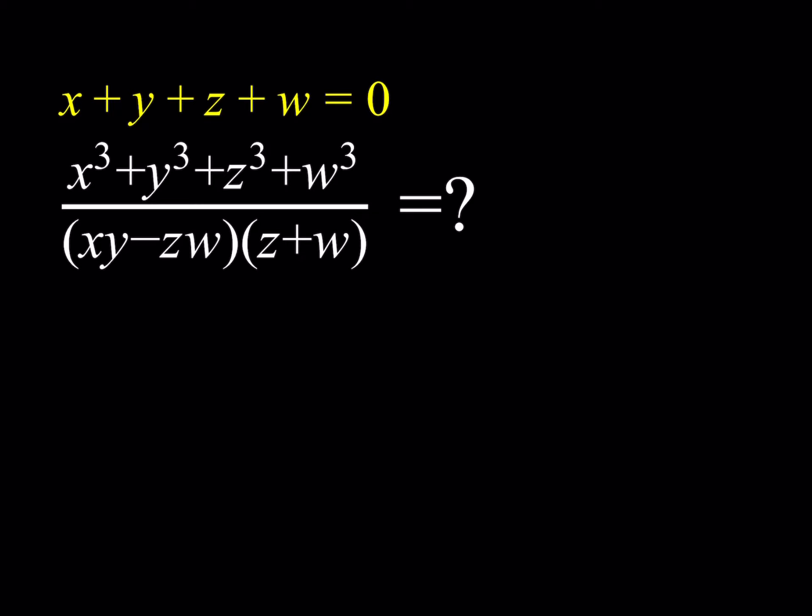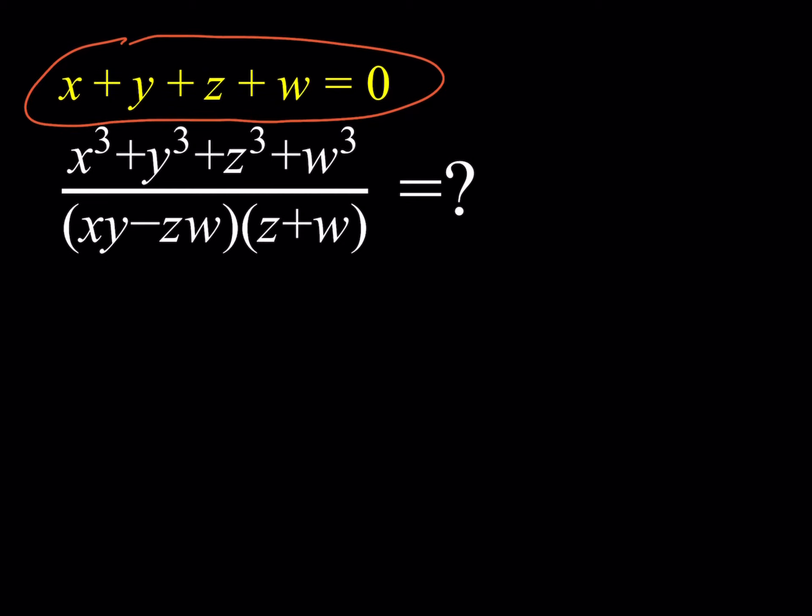My favorite method involves cubing the whole thing. You're going to have four terms, you're going to cube it, and there's going to be a lot of interesting math here. I'm going to take this expression, and always remember that the sum of four quantities is 0. We're just going to cube that expression.